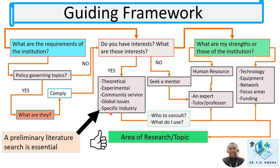And finally, there is specific industry interest. You could find that you are being sent by a certain industry to undertake research in an institution. Those institutions may require you to solve their problems, and you are already bound by the rules or contract of that institution. Sometimes as a student you don't know what you want to do — you don't have interests, you are in a gray area. That's when you need to seek a mentor.